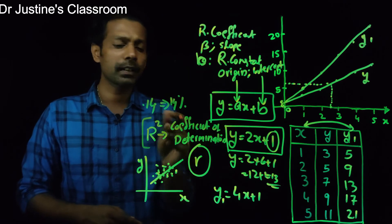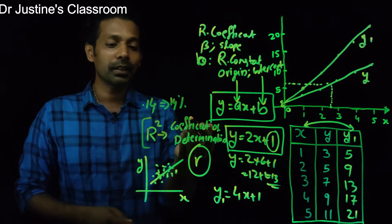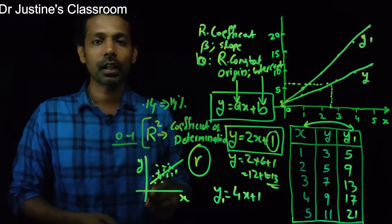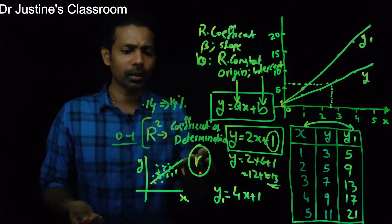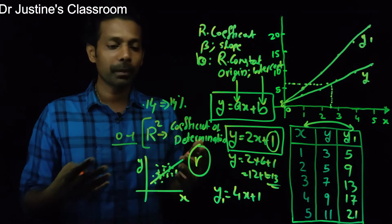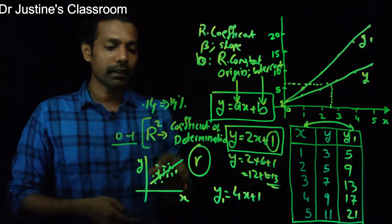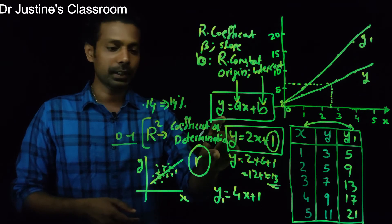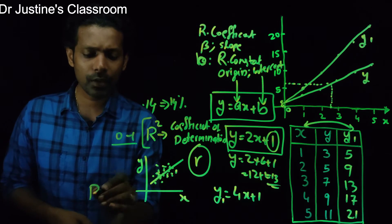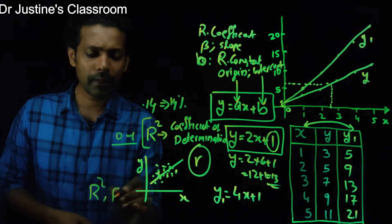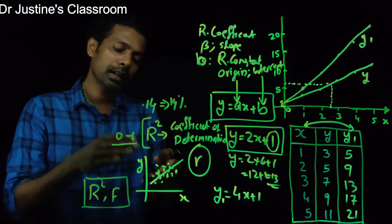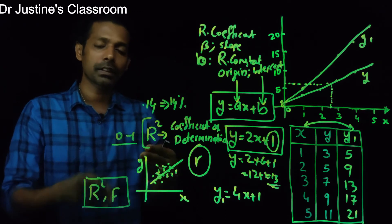Since R-square is a squared value, it is always positive, ranging from 0 to 1. This R-square value has to be tested for significance using an F value, as explained in the multiple correlation video. So the first task in regression is to find the R-square value and test whether a significant straight line relationship can be established.